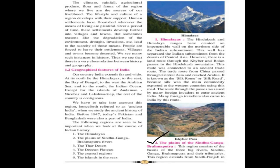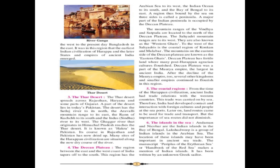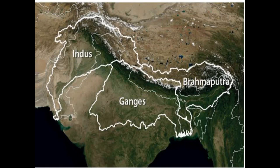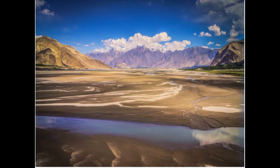The Plains of Sindhu, Ganga, and Brahmaputra. This region consists of the basins of the three big rivers — Sindhu, Ganga, and Brahmaputra — and their tributaries. It extends from Sindh and Punjab in the west to present-day Bangladesh in the east. It was in this region that the earliest Indian civilization of Harappa and the later states and empires of ancient India emerged. These plains spread approximately 3200 km from east to west, with an average width of 150 to 300 km.